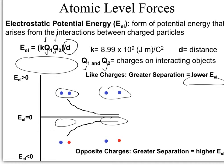Why do we care about this chemically? Like charges don't want to be next to each other, so they'll have higher energy if forced into close proximity — that close state is more energetic. Opposite charges desperately want to be together, so they're in a low energy state when close; separating them gives them opportunity to interact with something else and raises their energy. This makes sense both energetically and mathematically.